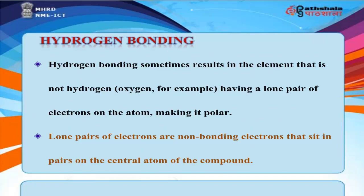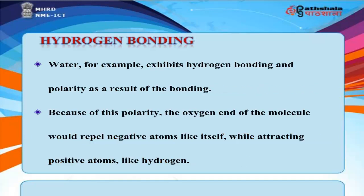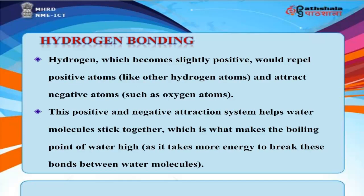Hydrogen bonding sometimes results in the non-hydrogen element — oxygen, for example — having a lone pair of electrons on the atom, making it polar. Water exhibits hydrogen bonding and polarity: the oxygen end of the molecule repels negative atoms while attracting positive atoms like hydrogen. Hydrogen, which becomes slightly positive, repels positive atoms and attracts negative atoms such as oxygen. This positive-negative attraction system helps water molecules stick together, which is why the boiling point of water is high — more energy is needed to break these bonds.